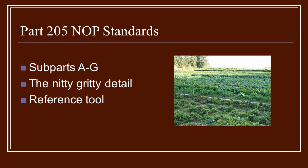Within Part 205, the National Organic Production Standards, we have subparts A through G. And this is really the nitty-gritty, the down-and-dirty detail of the rules and regulations of organic production. It's a great reference tool.